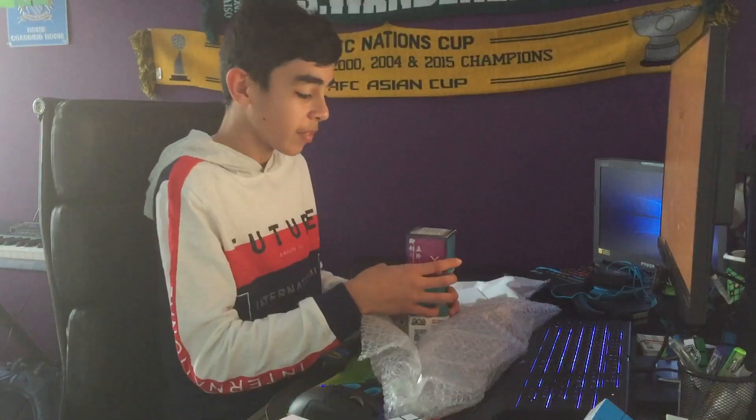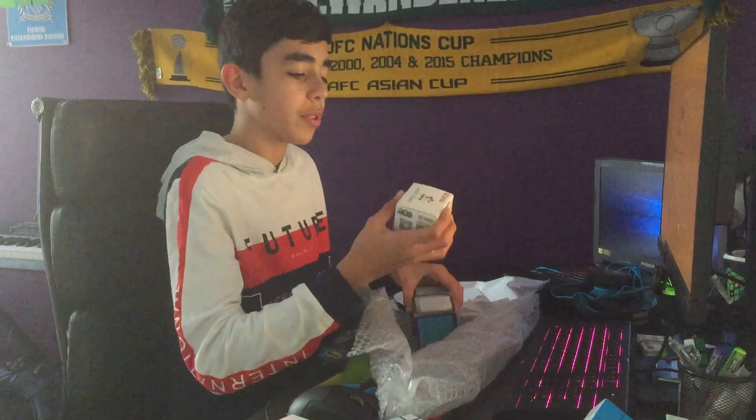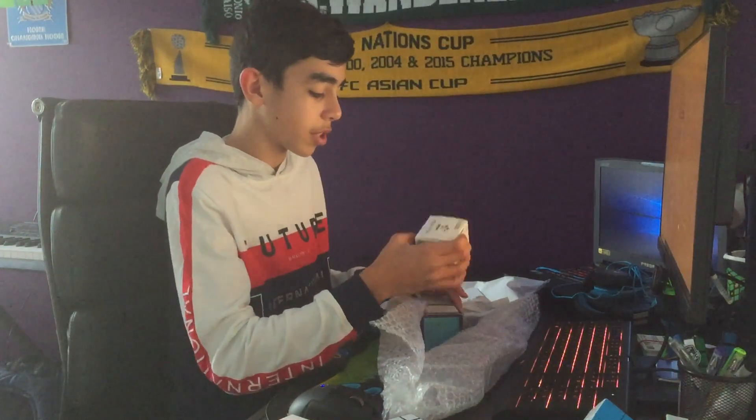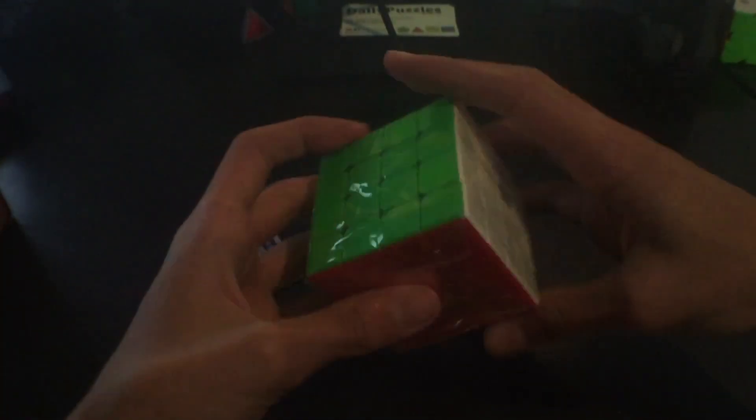It's two YJ cubes, pretty much the same just subsets of each other I believe, and we have the YuXin Little Magic M. That's pretty cool, so let's check these puzzles out. We'll start off with the 4x4. Similar packaging to all the other YJ cubes, comes with a pamphlet and cube wrapped up.